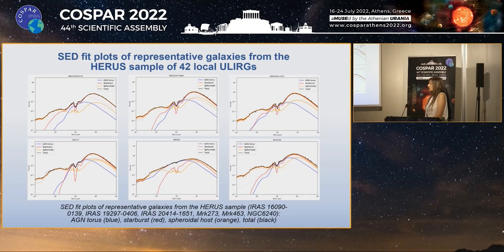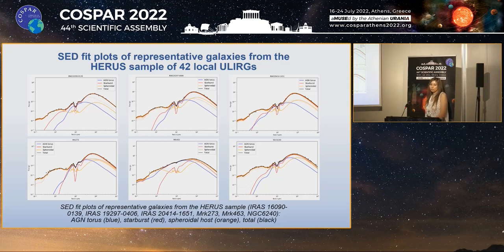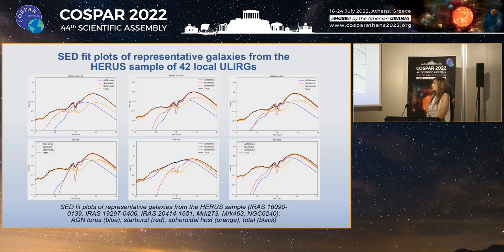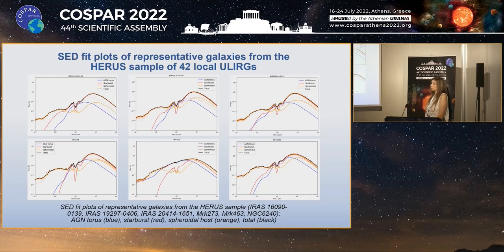Now I will present some of our results. To give an impression of the results, I selected six representative galaxies from the HERUS sample of 42 local ULIRGs. I present the ultraviolet to sub-millimeter SEDs of these galaxies using the Cygnus radiative transfer models for starburst, AGN tori, and host galaxies. The Spitzer-IRS spectroscopy data are included in the fitting at a spectral resolution matched to the radiative transfer models. HERUS studied some of the most luminous local ULIRGs, including famous objects like ARP-220, Markarian-231, and Markarian-273. In all the following plots, we show starburst in red, AGN torus in blue, and spheroidal host in orange, with the total emission shown by the black line.